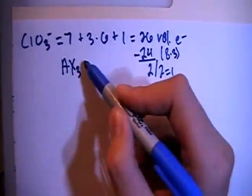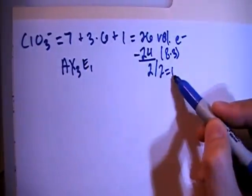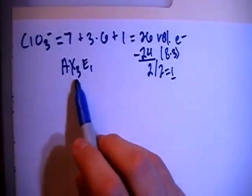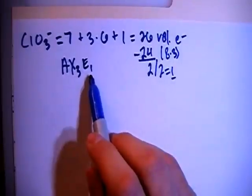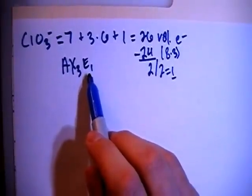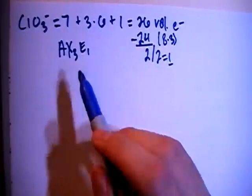3 from here, E1, there's this 1 here, meaning there's a central atom, 3 surrounding atoms, and 1 non-bonding pair on the central atom. So let's go ahead and draw this structure.